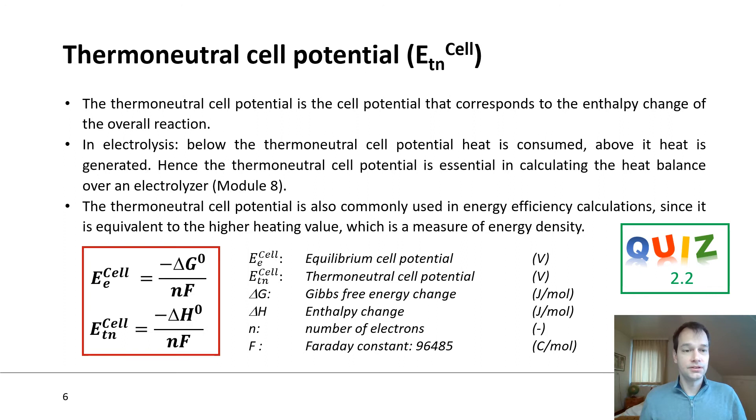A parameter that is related closely to the equilibrium cell potential is the thermoneutral cell potential, E_TN^cell. The difference with the equilibrium cell potential is that the thermoneutral cell potential is connected to the change in enthalpy of a certain reaction. Why is this such an important value? Because the thermoneutral cell potential indicates the temperature at which the electrochemical process does not consume any heat or release any heat. So if you operate at the thermoneutral cell potential, it will stay at the same temperature. If you operate above it, you are generating heat. If you operate below it, you are consuming heat and your cell will cool down.